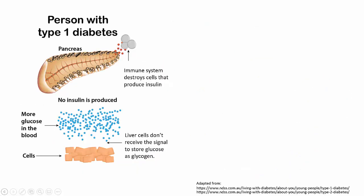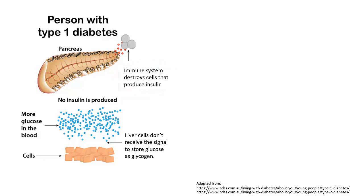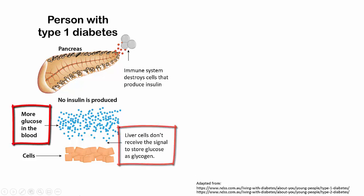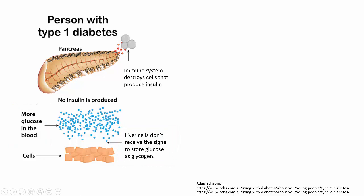There are two types of diabetes. In type 1 diabetes, the body's own immune system destroys the cells in the pancreas that make insulin. Since no insulin can be made, the negative feedback loop is missing one of its responses, and the body is unable to prevent glucose levels from getting too high. Type 1 diabetics manage their condition by injecting insulin into their bloodstream at regular intervals.